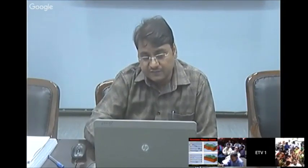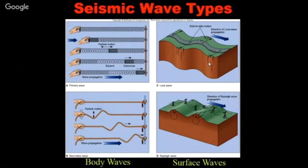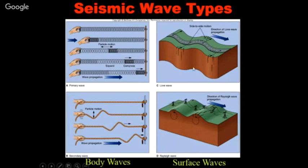P waves are compressive — like compressing a spring. S waves move like waving a rope tied at one end. Love waves move like a snake below the earth's surface, generating torsional/twisting moments in structures. Rayleigh waves propagate like ocean waves below the surface.